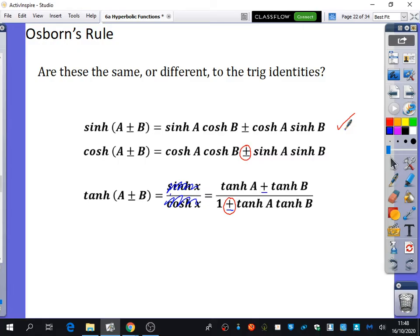This one here is identical to the trigonometric one because why? According to Osborn's rule. There's no product of two sines here. Look, we have sine and cos, or sinh and cosh, and another cosh and sinh. They're different.